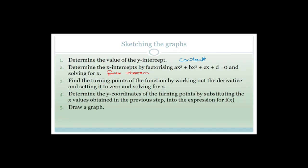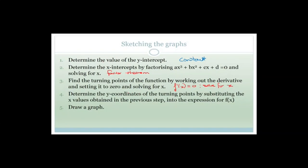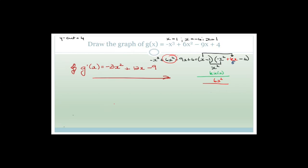Then find the turning points of the function by working out the derivative, letting it equal zero and solving. In other words, we go f'(x) — we find the first derivative, let it equal zero, and then solve for x. Then we determine the y-coordinates by substituting back into the original. When in doubt, substitute into the original and then you draw the graph. That sounds quite long-winded, but if we go through it nice and slowly, it's actually not that bad.